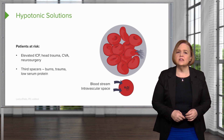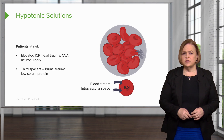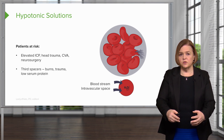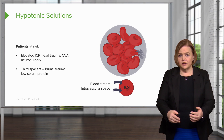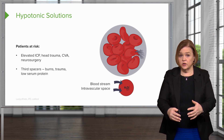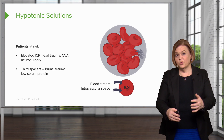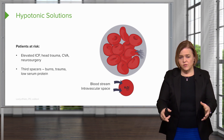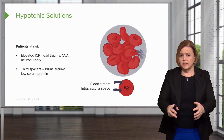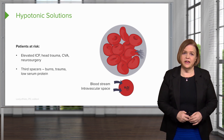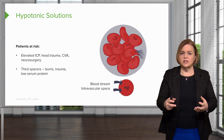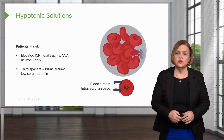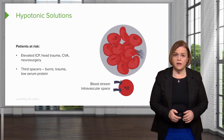Also, if someone has low serum protein — protein is a really big molecule that's charged in a way that attracts water, because it's charged to attract sodium, and where sodium goes, water follows. So protein in your bloodstream is what helps keep fluid where it's supposed to be. If somebody already has low serum protein, they're having a difficult time keeping fluid in the right space, so hypotonic solutions are not the best choice for them.